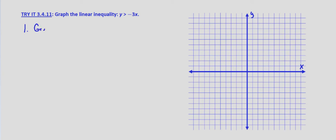So step one, graph the boundary line, and that's y equals negative 3x. So we already said, if we plug in x equals 0, you get y equals 0. So we know that the origin is a point.